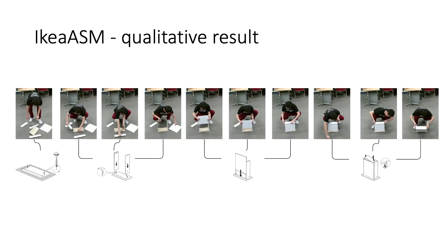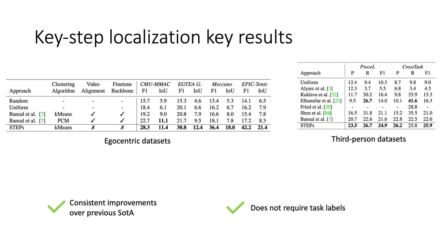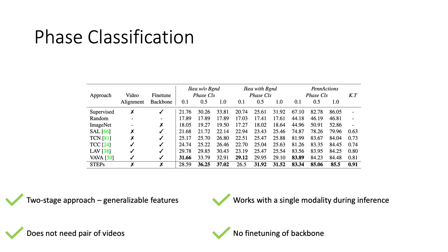Here, we qualitatively show key steps extracted for the task of assembling an IKEA drawer. We see that the extracted steps seem reasonable given the manual illustrations. And here, we show the key steps for the task of replacing a printer cartridge where the data was captured using a HoloLens 2 device. Key step recovery is inherently ambiguous and there do not exist large-scale annotated datasets with key steps for procedure learning, so we instead rely on proxies like key step localization. We see that our approach outperforms the baselines by a large margin while using the same backbone and single modality inference. We also evaluated our approach for the task of phase classification on the IKEA assembly dataset and pen actions, and see similar improvements over prior works.